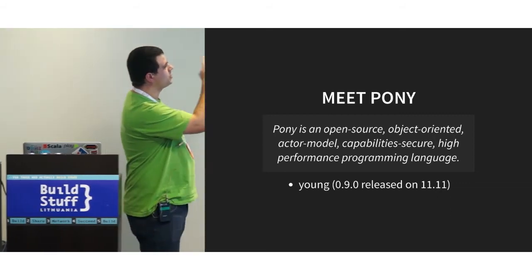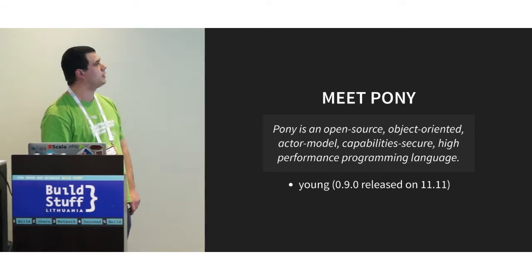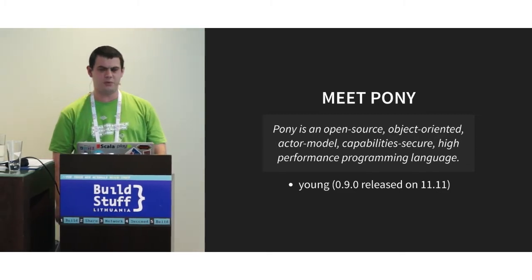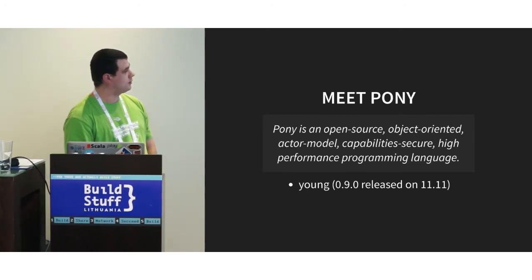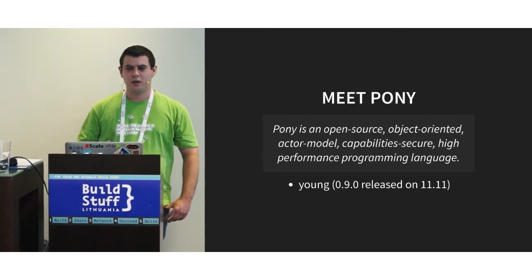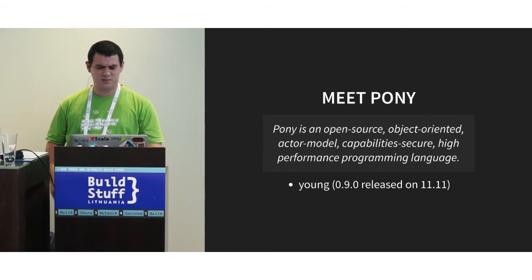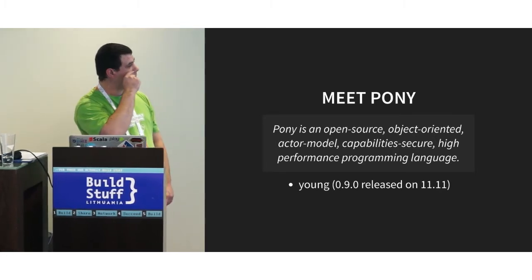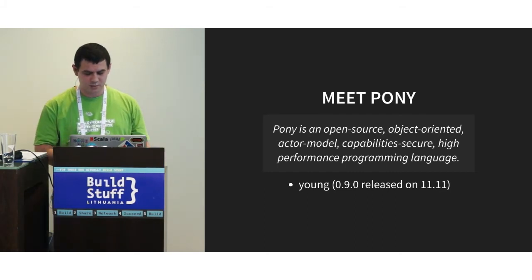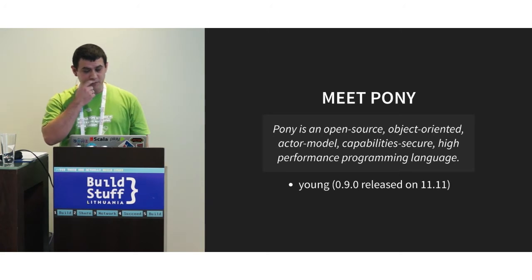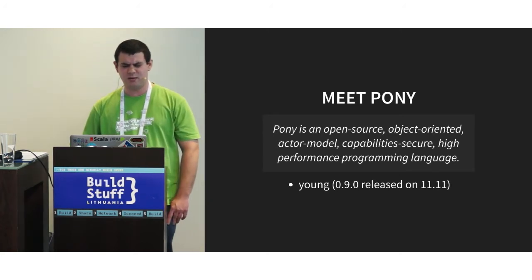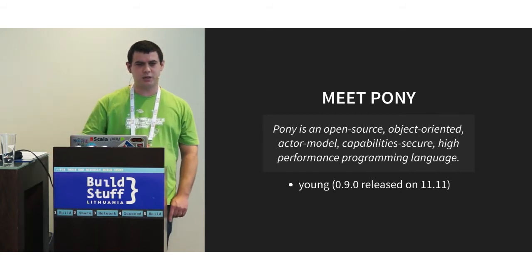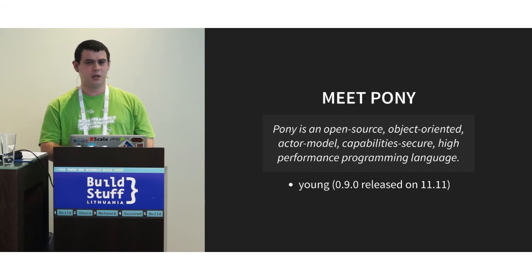Meet Pony. The definition from the Pony website: Pony is an open source, object-oriented, actor model, capability-secure, high-performance programming language. It's a relatively young language, released February last year. For a long time it was in a stale state, but more development started happening during the summer. The last version was released last Friday and it's 0.9. It's developed as part of academic study — Sebastian Blessing made a master thesis outlining the concepts of Pony, and there are proofs for everything Pony uses, with links to white papers on the Pony Lang website.